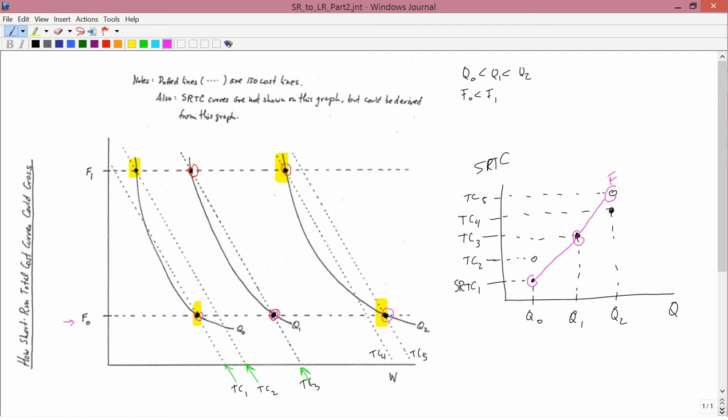And I'm going to pick another color. And let's do F1. At F1, you're at TC2, TC3, and TC4. TC2, TC3, and TC4. That's the F1 short run total cost. See, they're crossing.